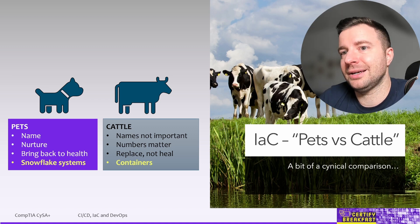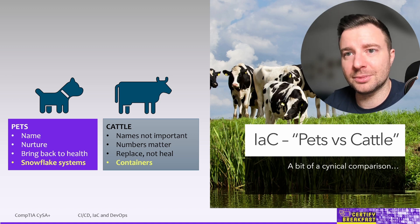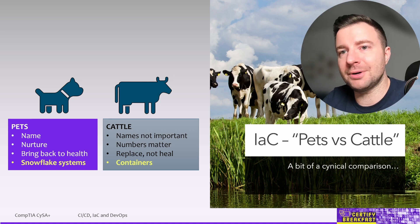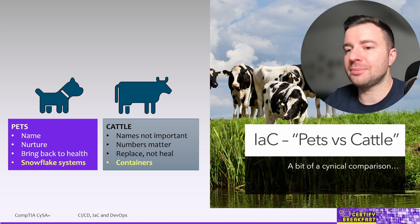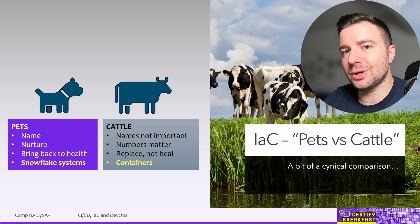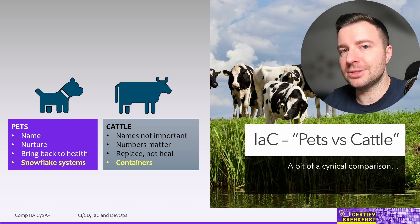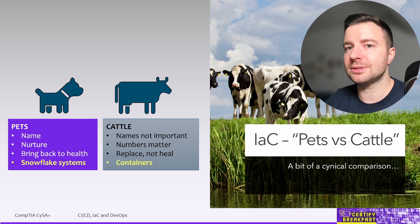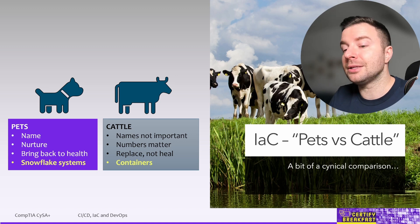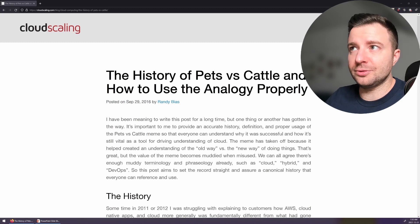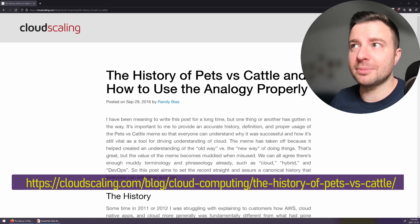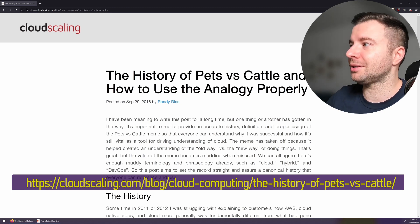So that's pets versus cattle — it's a bit of a cynical approach, but we're just killing cloud instances, not murdering animals, so that's okay. Cloud providers and orchestration tools like Terraform will actually prefer to destroy a resource and recreate it from scratch whenever a major change needs to be performed, so that you always have consistency and your infrastructure is predictable and compliant with your desired configuration in your infrastructure as code. There's actually an article about the history of pets versus cattle and how to use this analogy properly.